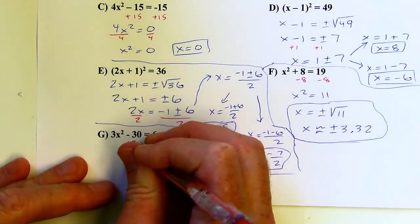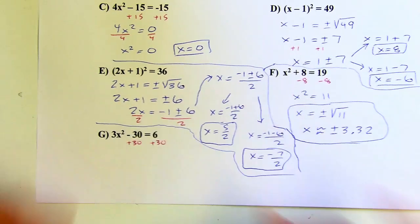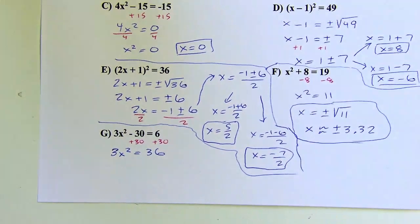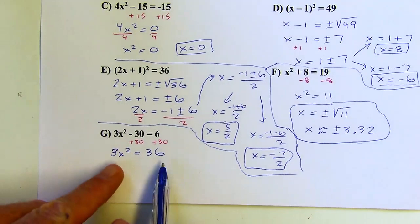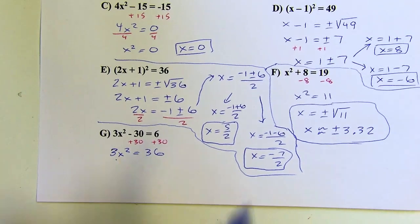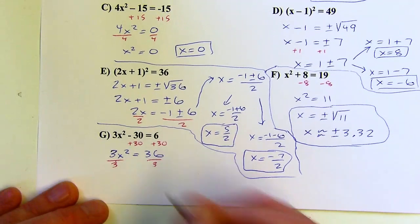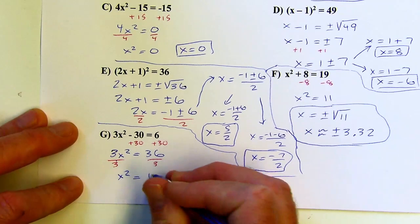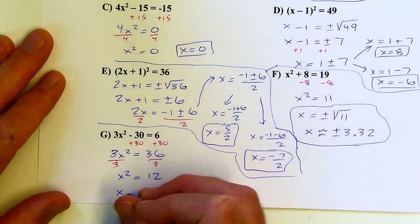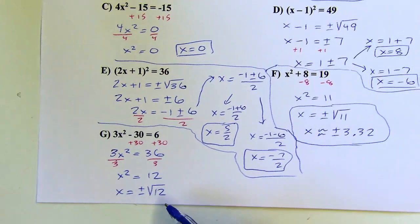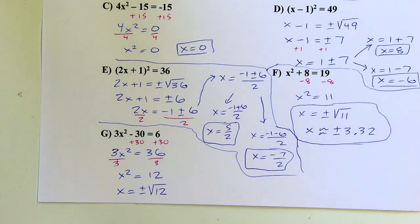I'll add 30 to both sides. So 3x squared equals 36. I sometimes see people taking the square root of both sides right now, but I've still got 3x squared — before you take the square root, isolate x squared all the way. So I want to divide by 3 next, because you've got to take the square root of the whole equation. 36 divided by 3 is 12. Now I'm going to take the square root of both sides: plus or minus square root of 12.